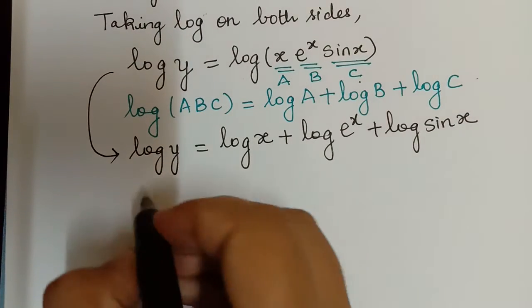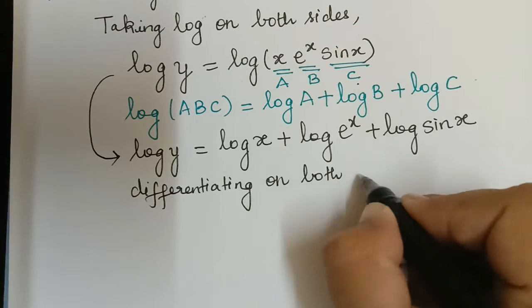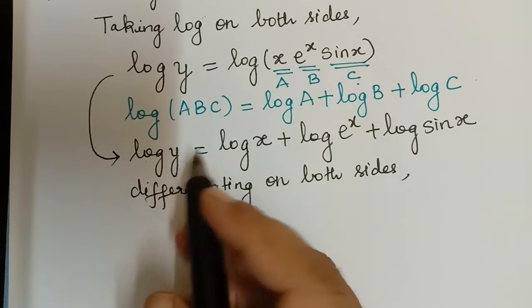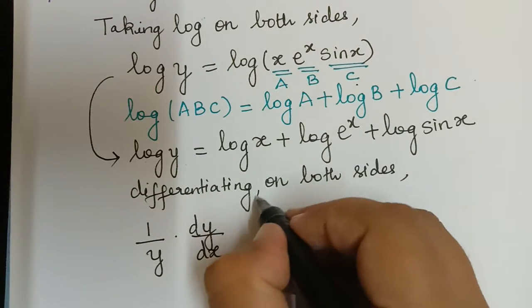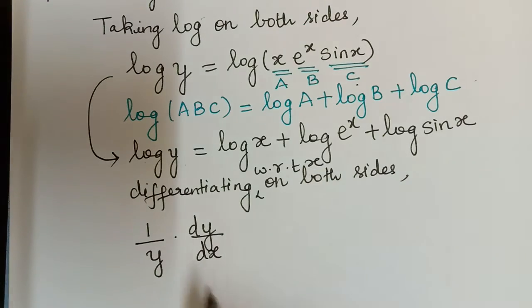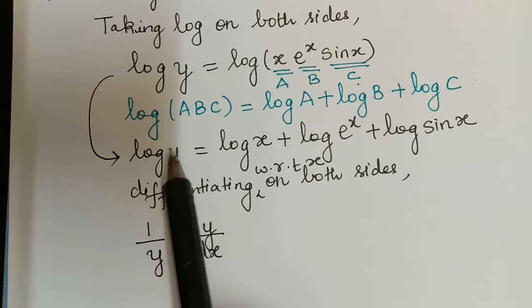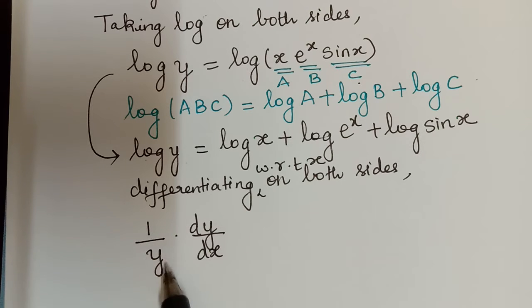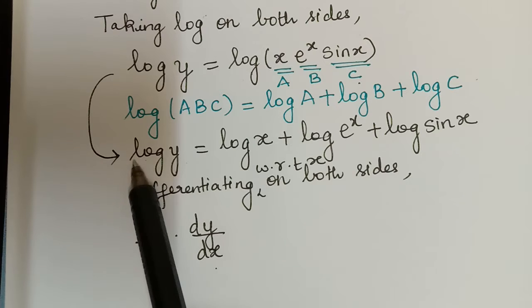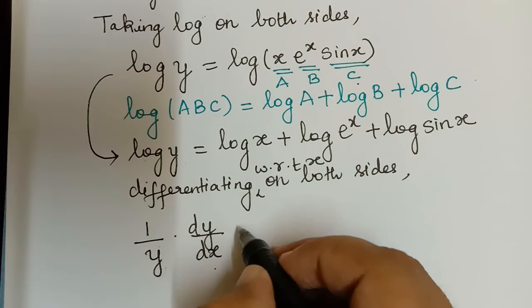After this we shall differentiate on both the sides. When we differentiate log y, we get 1 by y multiplied with dy by dx, because we are differentiating with respect to x. By using the chain rule method — function of a function — differentiation of log y gives 1 by y multiplied with dy by dx.